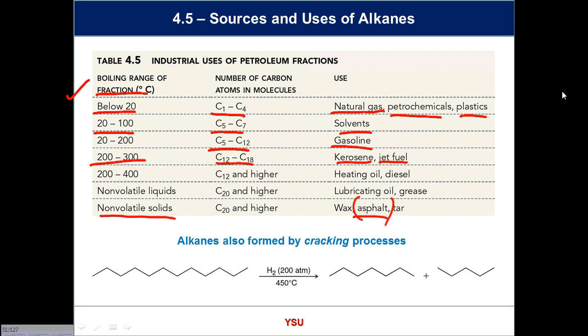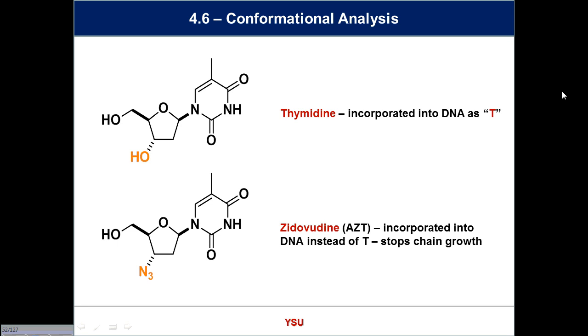Engineers might be involved in the process called cracking—a thermal process where you take higher alkanes, heat them under a hydrogen atmosphere, and break them into smaller pieces. The chemistry is complicated; we're not there yet. But you can take higher material of little use and break it into smaller pieces to sell as solvents or petroleum products. Alkanes are the feedstock for the chemical industry and help us get to school and back.